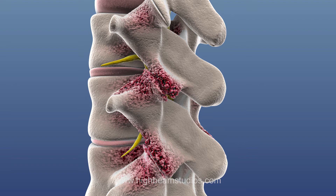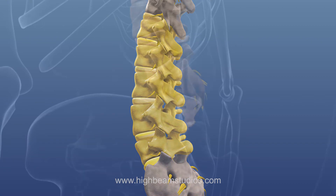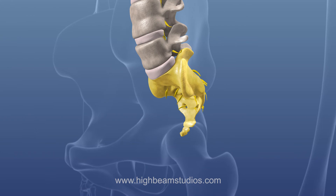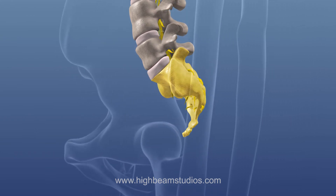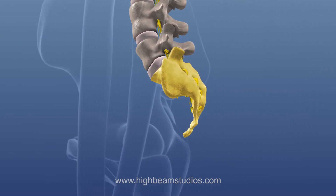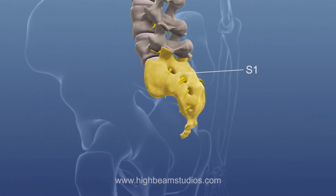Bone spurs may push into the spinal canal, causing spinal stenosis, which also may cause pressure on the nerve roots. Injury may occur to any of the five vertebrae of the lumbar spine, also known as L1 to L5, or at the sacrum. The upper part of the sacrum is known as S1.